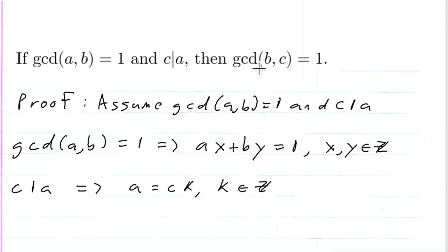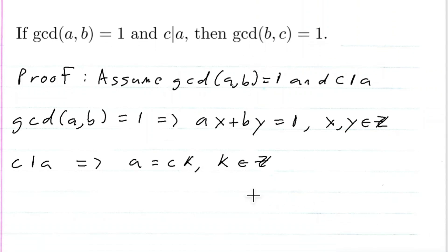So I want the GCD of b and c equal to 1, so I want a linear combination involving b and c and integers. Well, since I have a in this equation and I have a equal to ck here, I can substitute that ck where the a is up here.